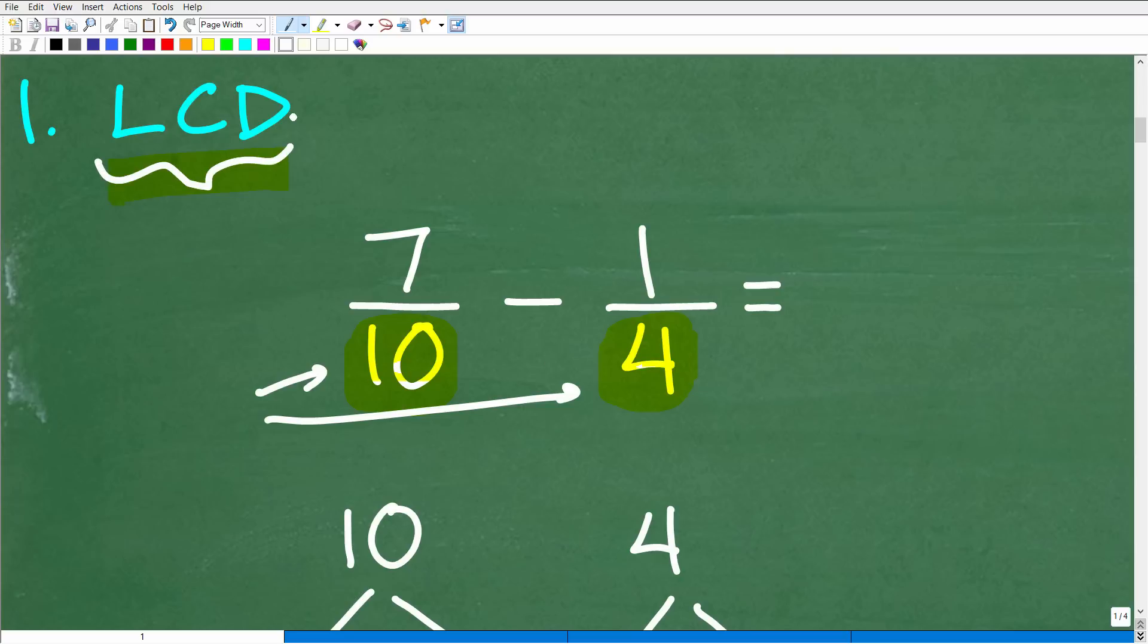Let me ask you a question: What is the LCD? What is the lowest common denominator? If you know the answer, put that into the comment section. Most of you can probably figure this out without too much difficulty because these numbers are pretty easy.